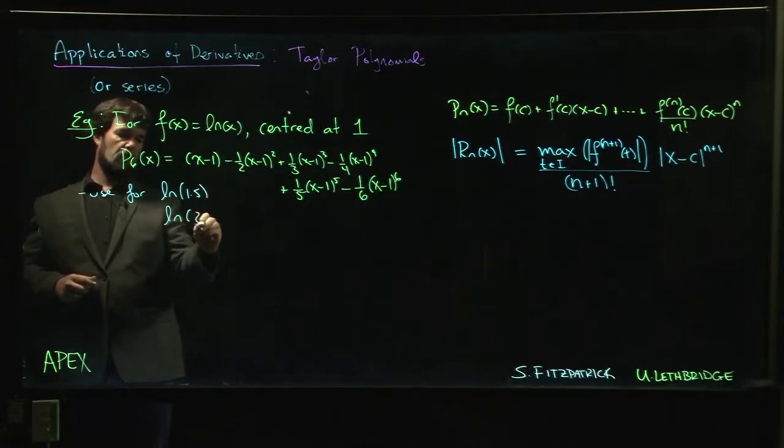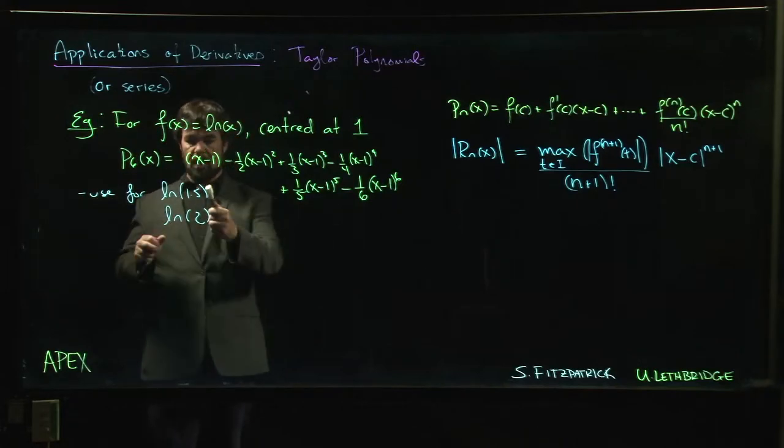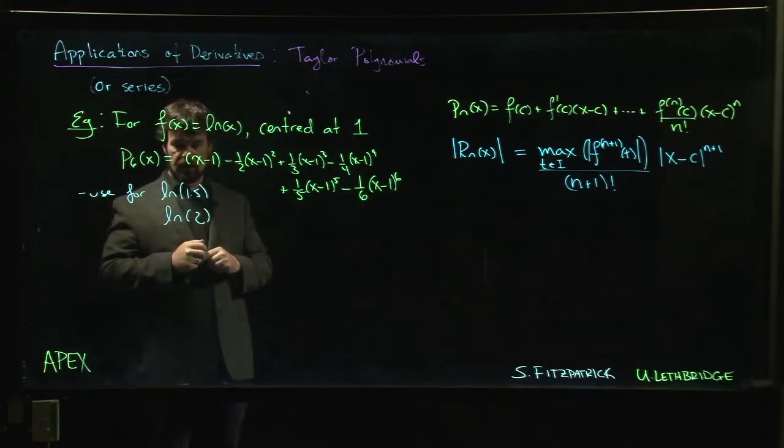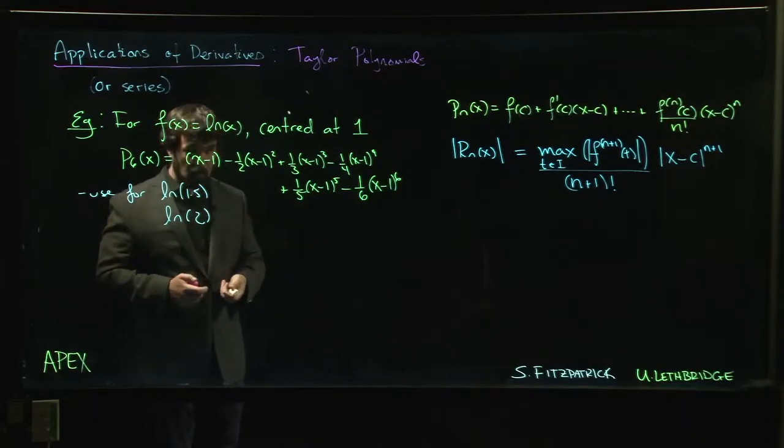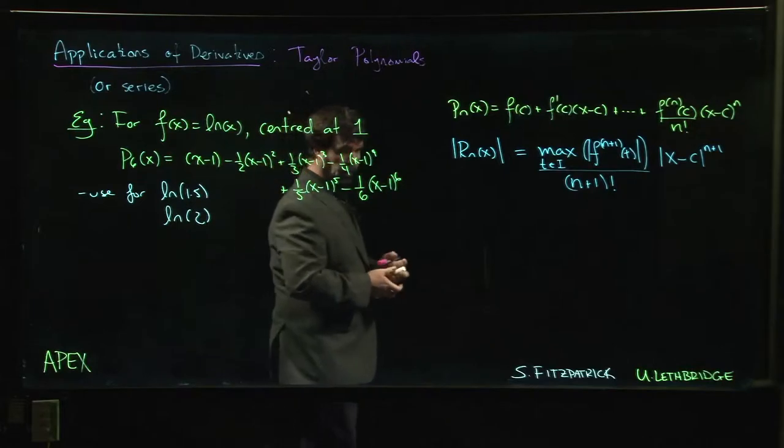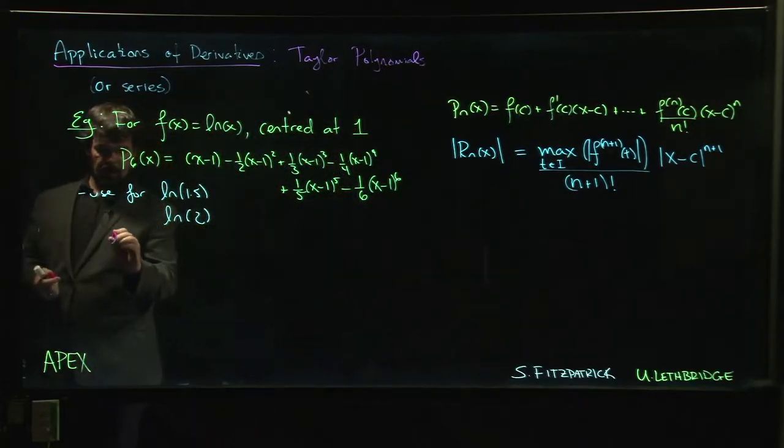And we did it for the natural log of 2, and we found that the approximation was not too bad for 1.5. It wasn't very good at all for natural log of 2. So now we want to look into this remainder and try to understand what's going on.